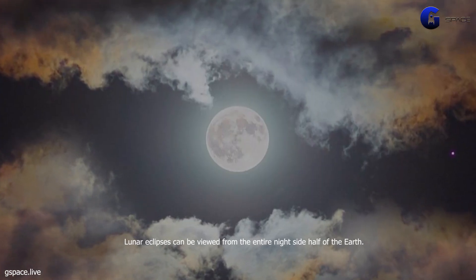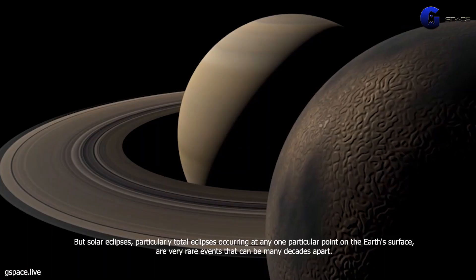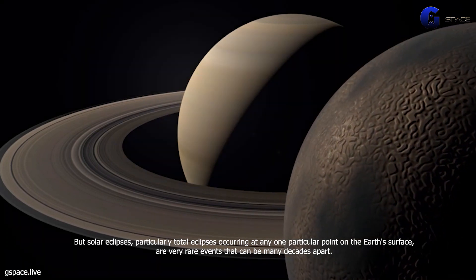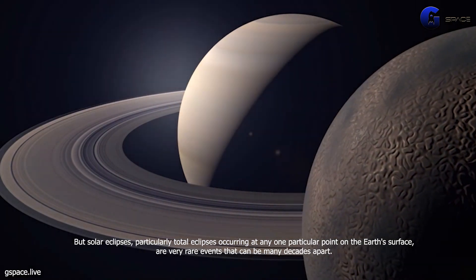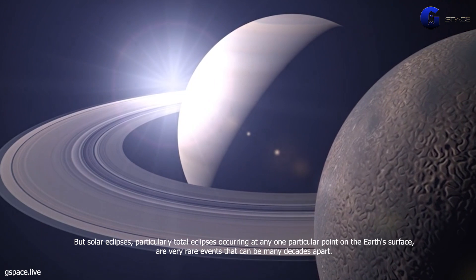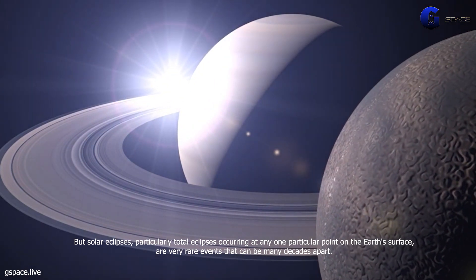Lunar eclipses can be viewed from the entire night-side half of the earth. But solar eclipses, particularly total eclipses occurring at any one particular point on the earth's surface, are very rare events that can be many decades apart.